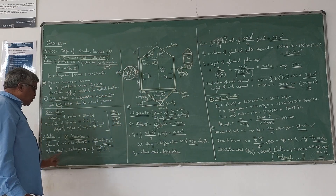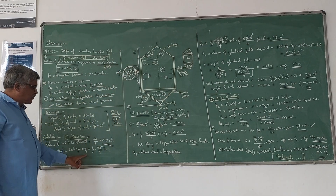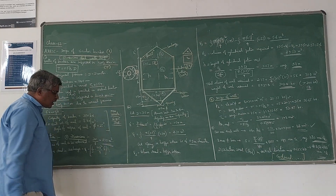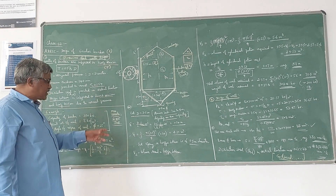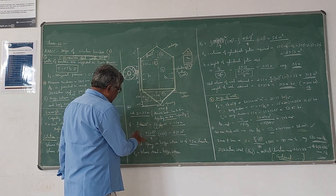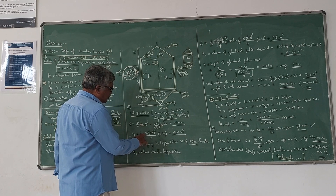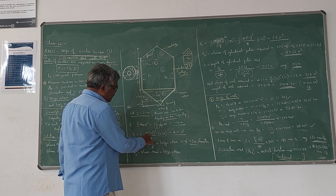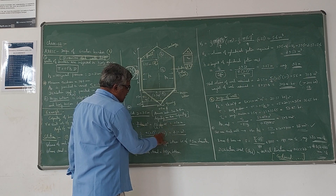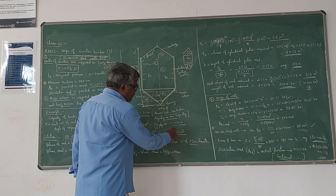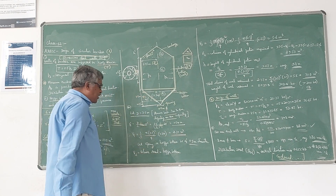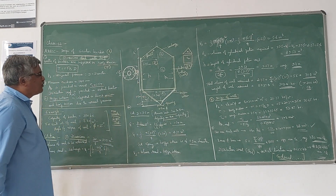Now we can calculate the volume using this formula: (1/3) × (πD²/4) × h'. Substituting D = 3.5 m and h' = 0.74 m, we get V1 = 2.37 m³.